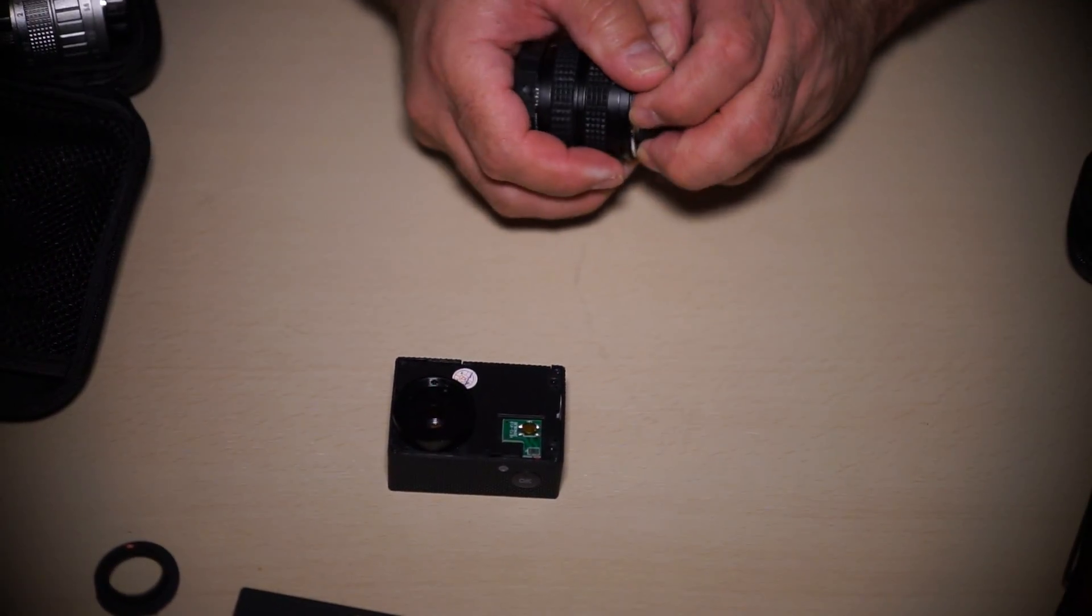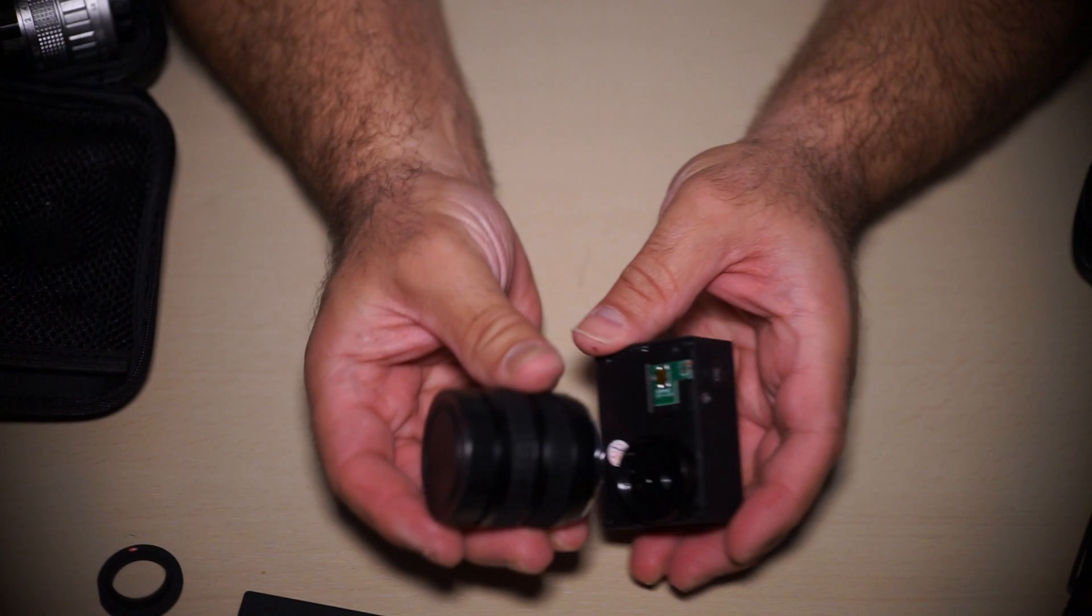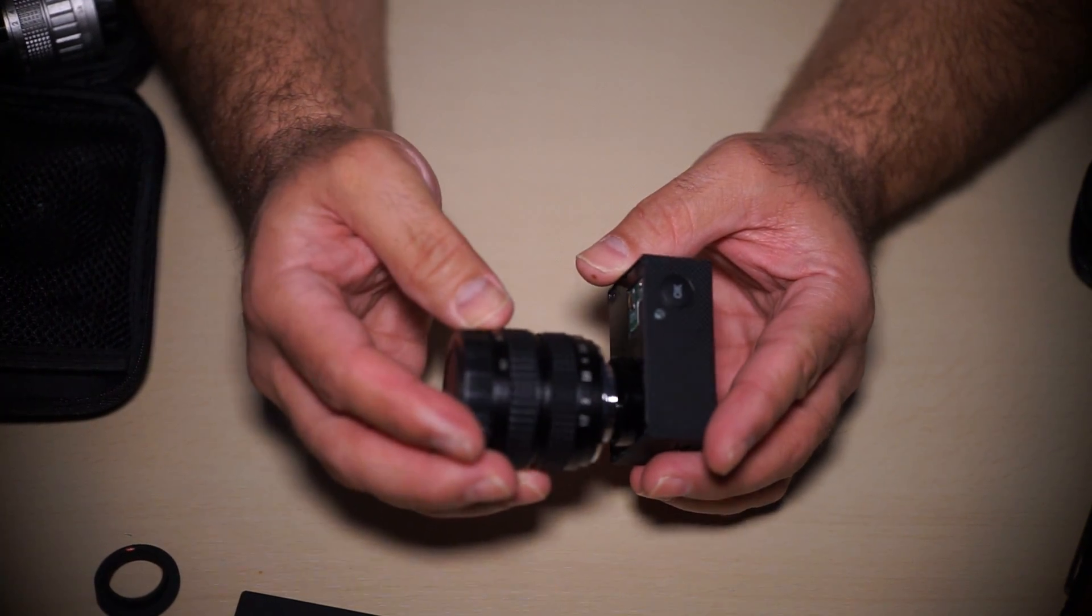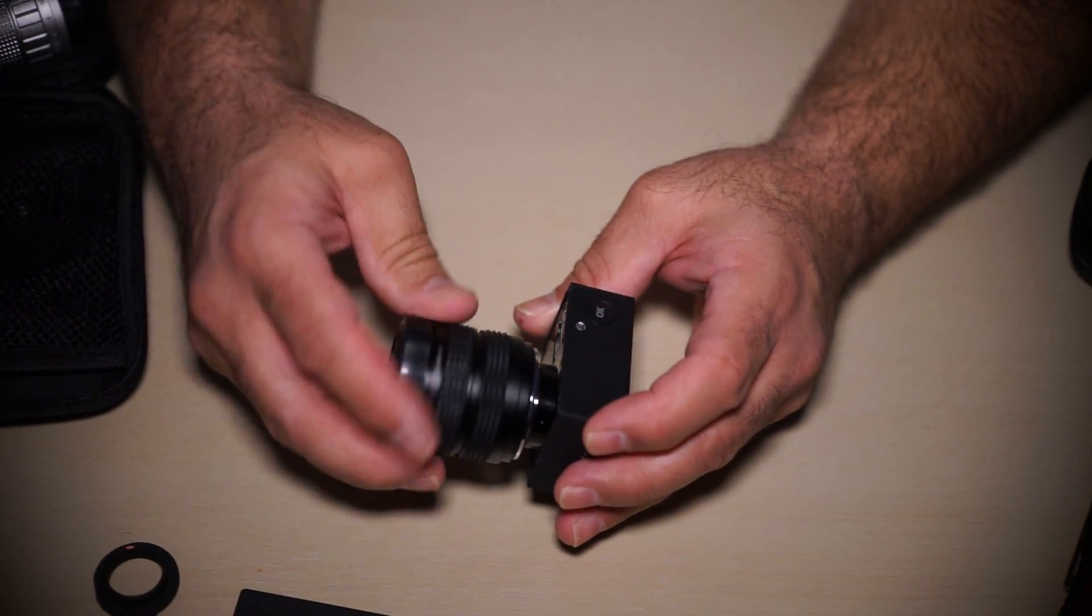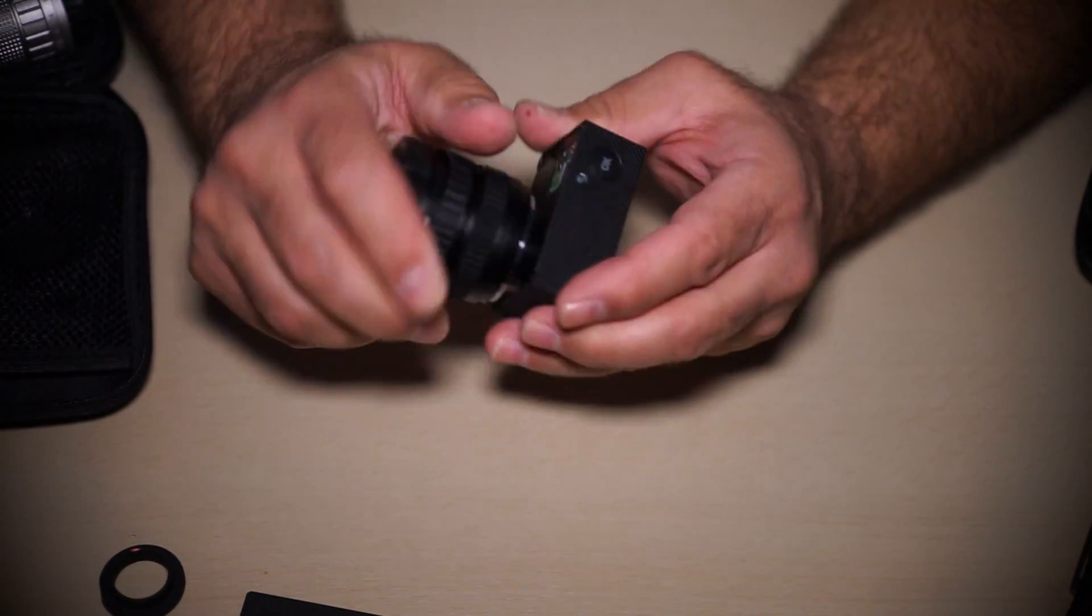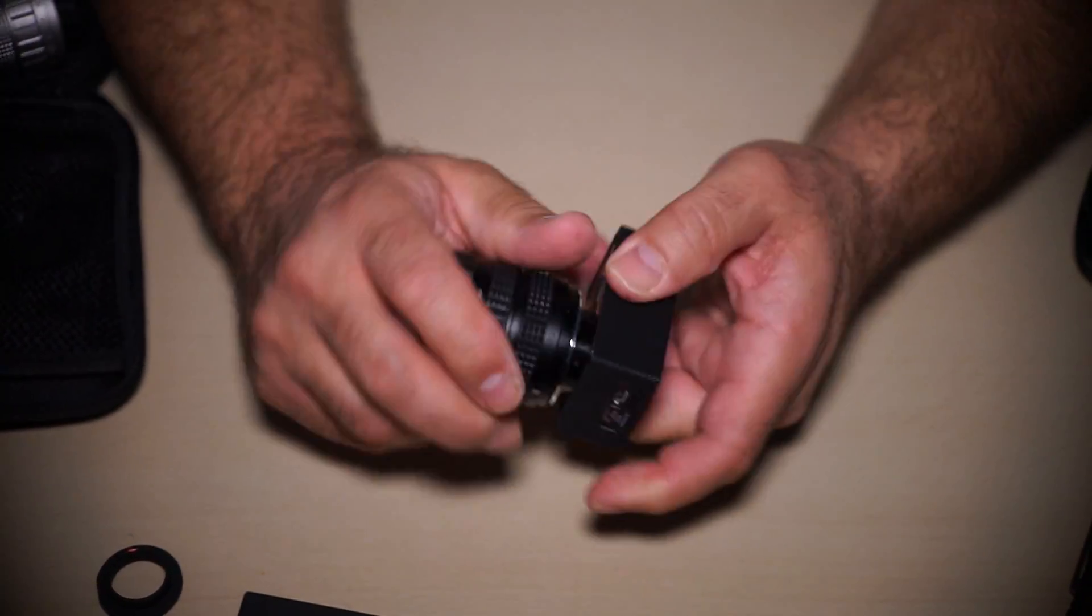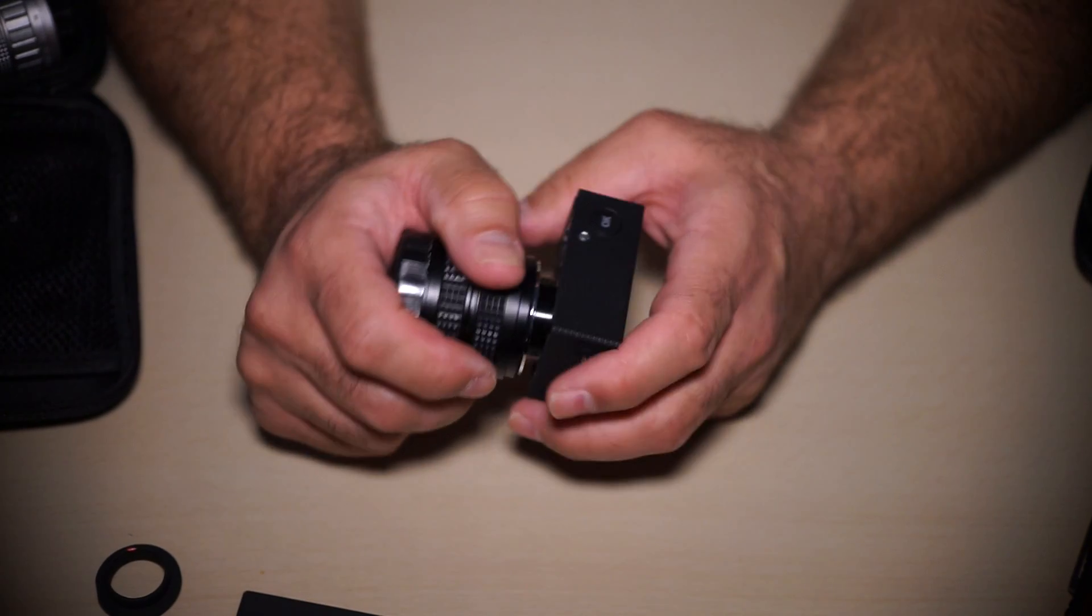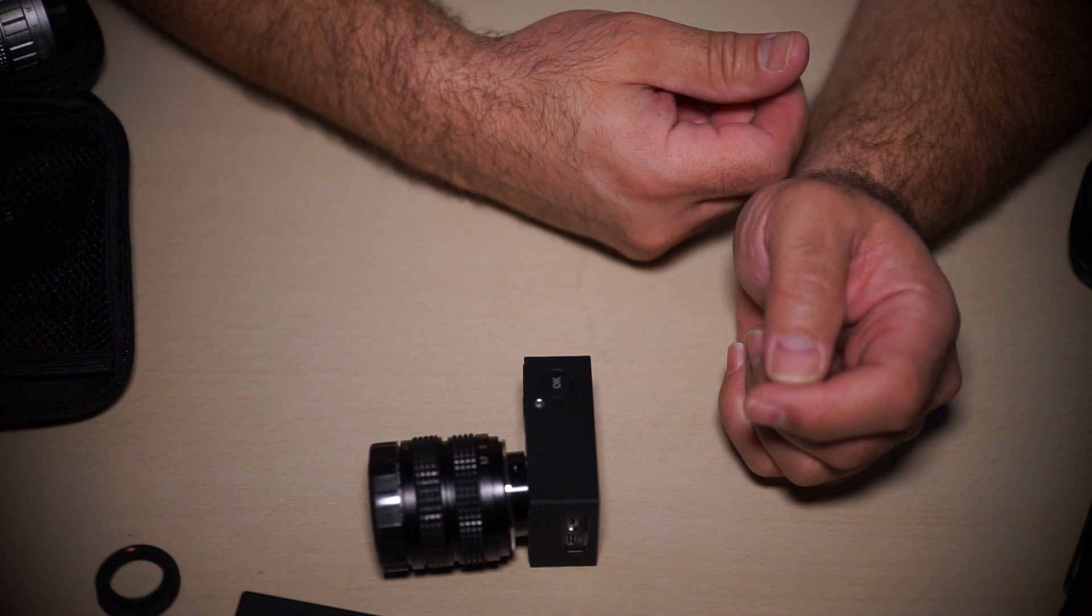Now we take this. Here's our C-mount lens, which is, again, the Fujian 35mm f1.7. And we simply screw that in. That gives us a little more grip to turn it in some more. Hopefully that'll let us do it. So, as you can see, it wasn't very difficult.